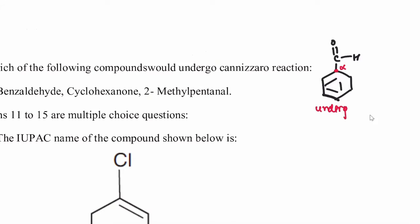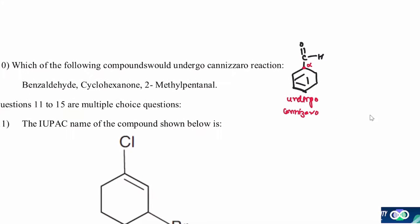Next is cyclohexanone. This is our alpha carbon, alpha carbon. So it will not undergo Cannizzaro, it will undergo aldol.